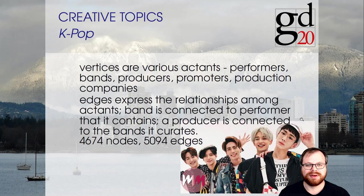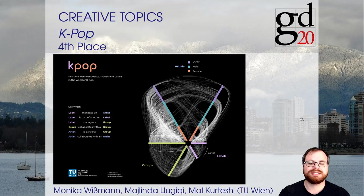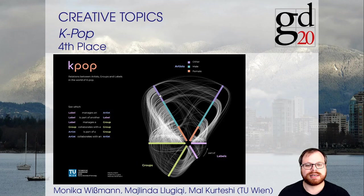In fourth place, we have a submission by Monika Wiesmann, Mailina Lugitschi, and Mal Kourteshi from TU Vienna. This is a so-called hive layout where all the artists, groups, and labels are laid out on three lines and all the edges are only between them. This is very nice for getting a big overview of the graph, and if you filter it you can really see some interactions.